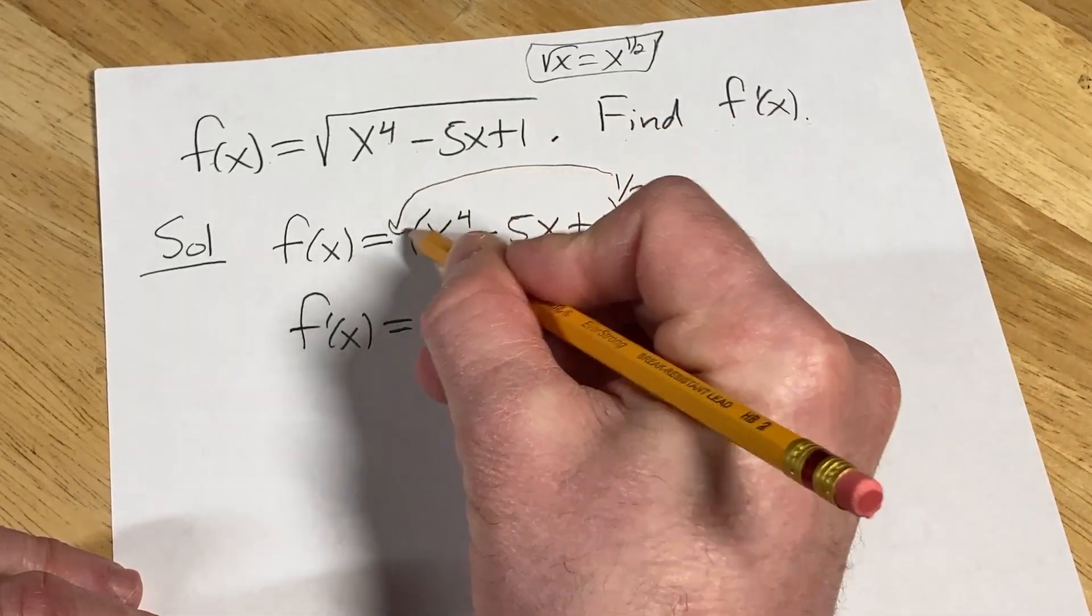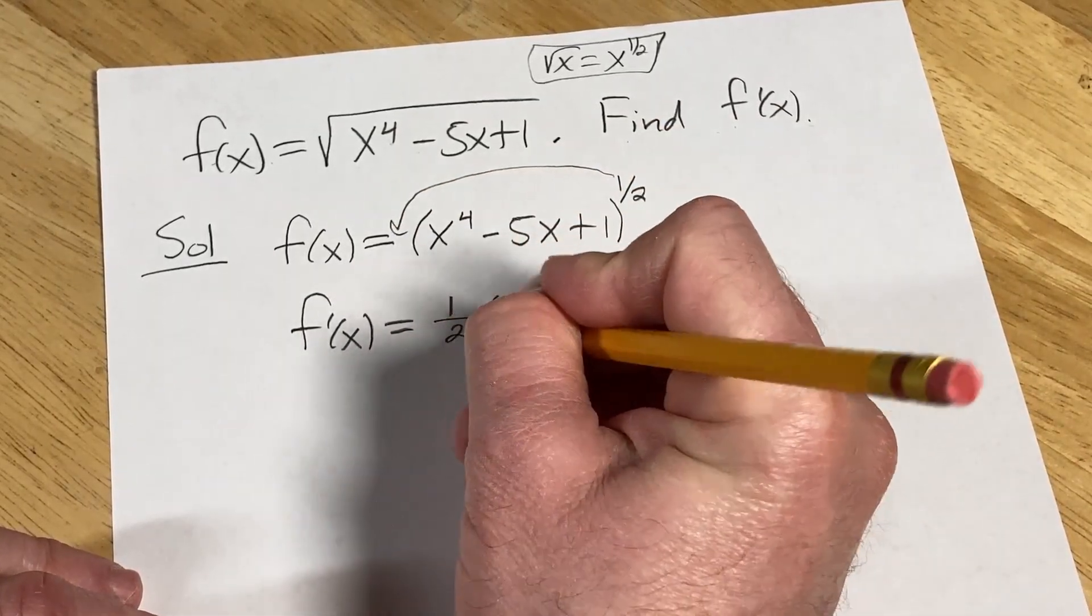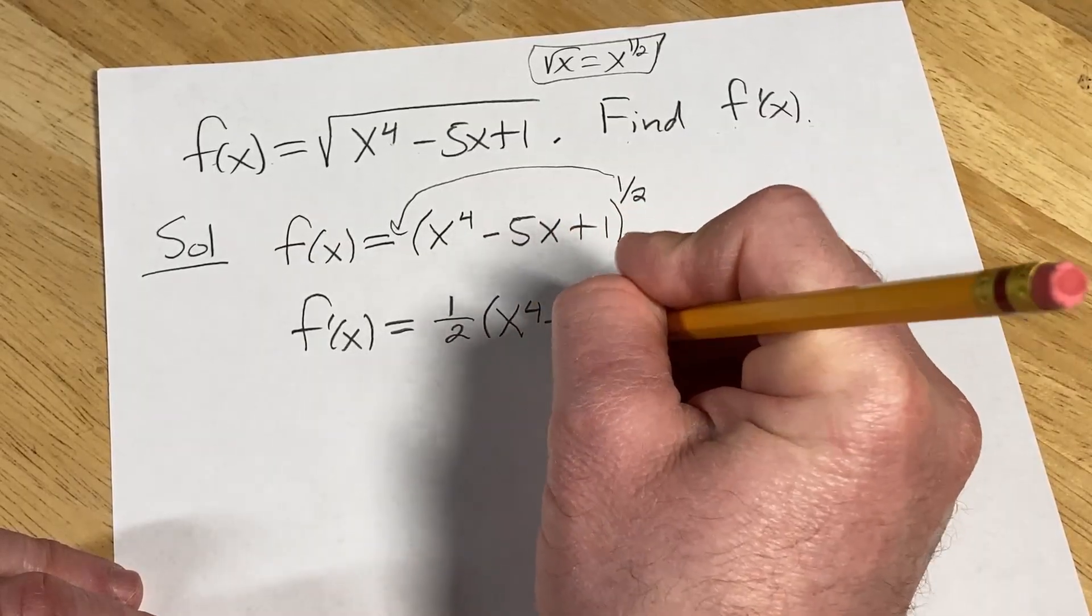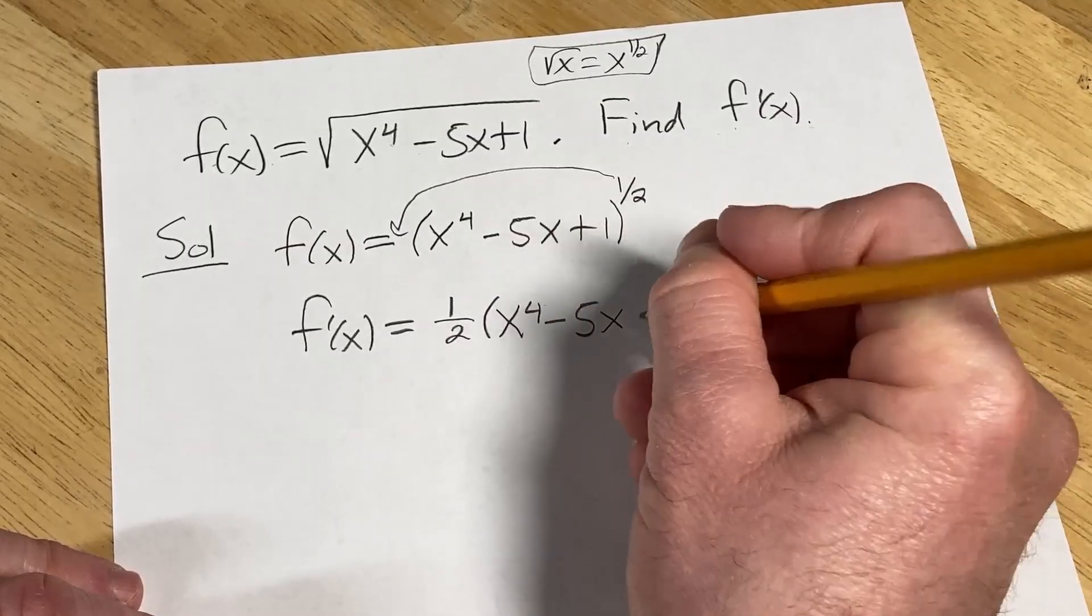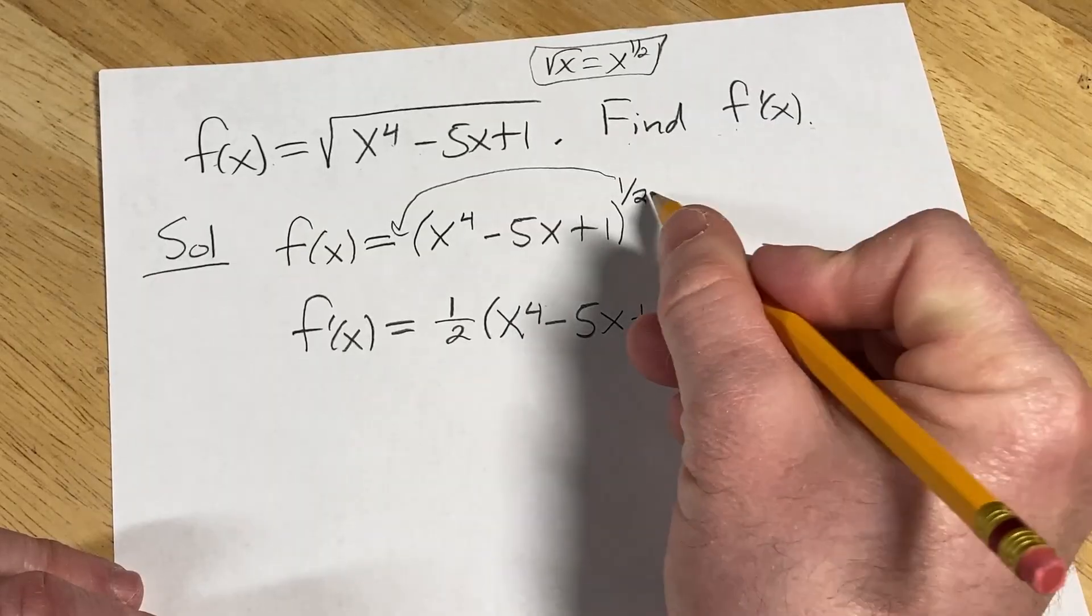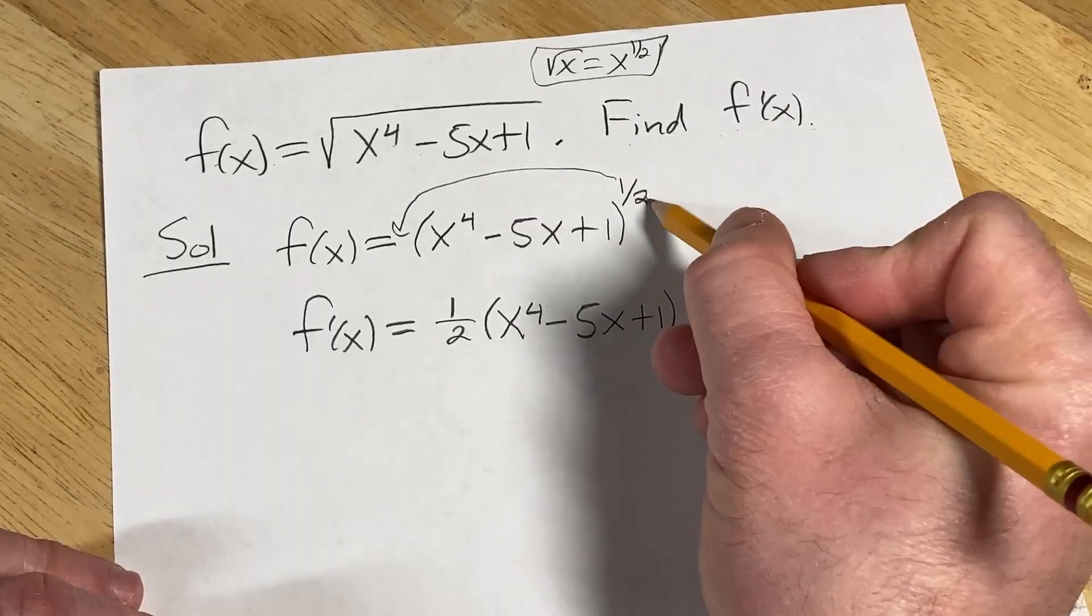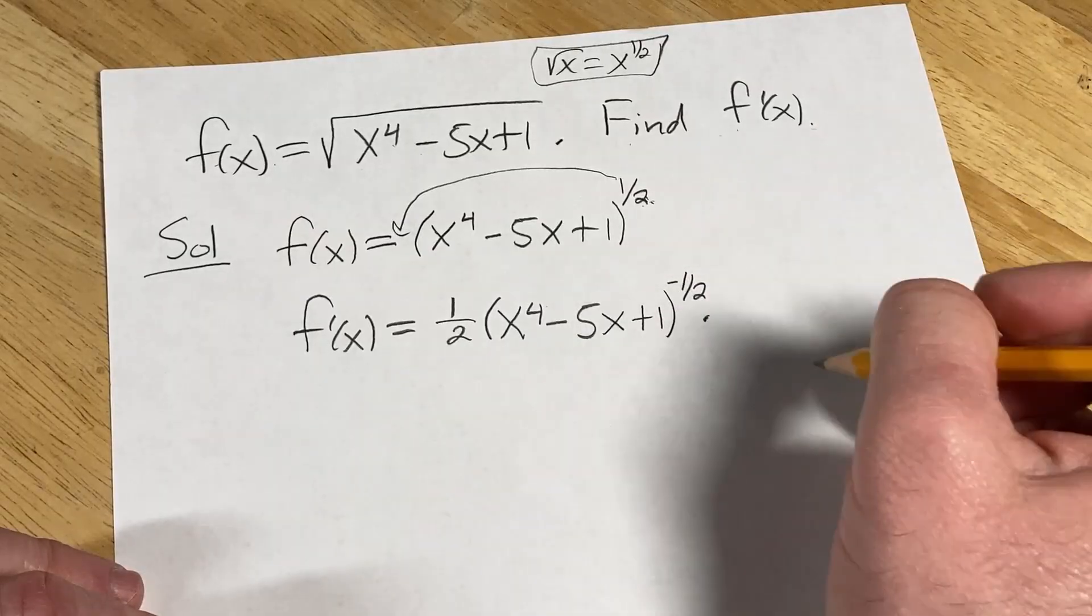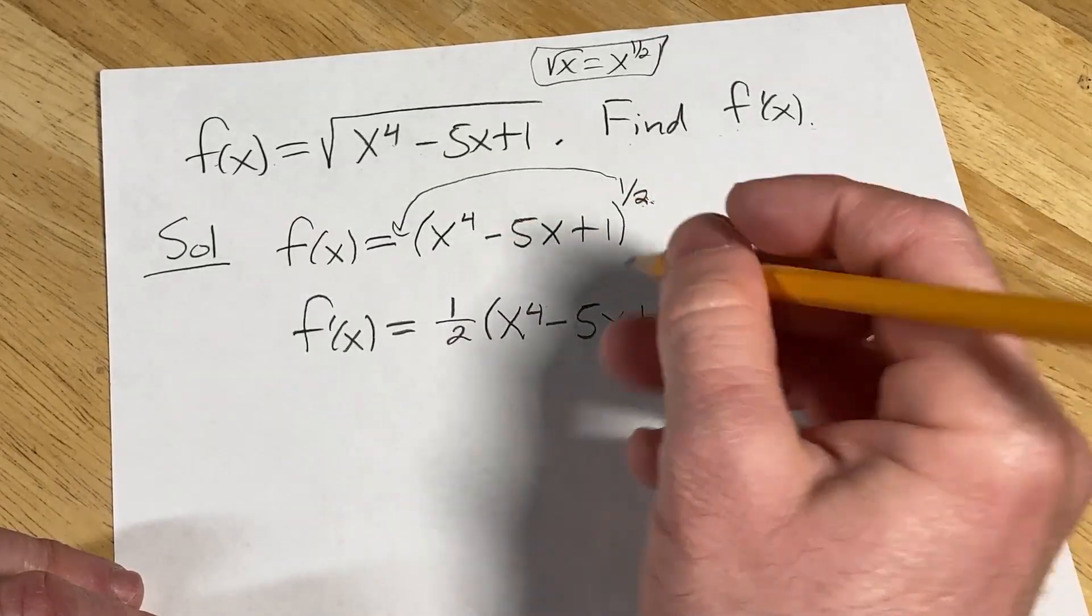You bring down the 1 half using the power rule here. You evaluate it at the inside, so you leave the inside alone, x to the fourth minus 5x plus 1. Then you subtract 1 from the exponent. So 1 half minus 1 is negative 1 half times the derivative of the inside.